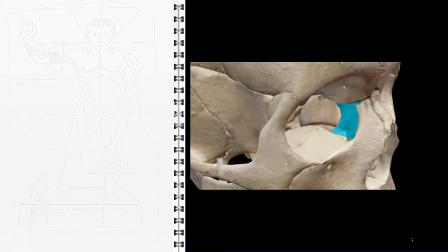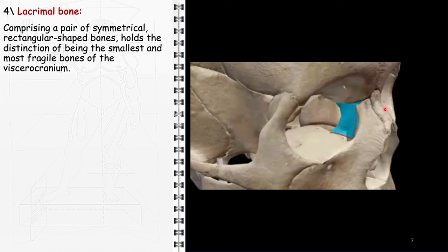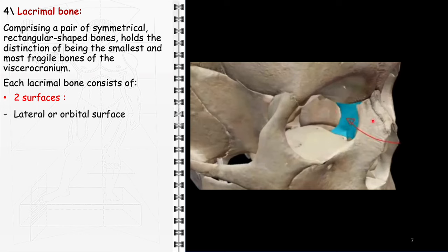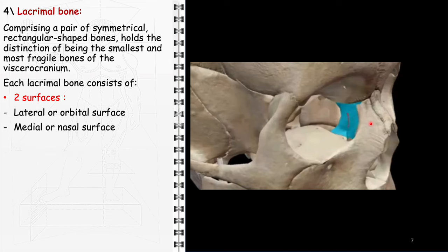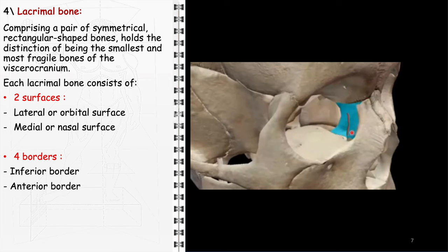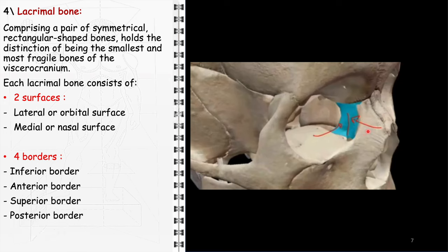The lacrimal bone consists of a pair of small, symmetrical, rectangular-shaped bones, noted for being the smallest and most delicate within the facial skeleton. Each lacrimal bone comprises two surfaces and four borders. The lateral or orbital surface forms a part of the medial wall of the orbit, its smooth, slightly concave nature facilitating the proper positioning and protection of the eye. The medial or nasal surface extends into the nasal cavity, contributing to the formation of the middle meatus. The four borders are: the inferior border, which aligns with the maxilla; the anterior border, articulating with the frontal process of the maxilla; the superior border, forming a segment of the orbital rim, especially at the lacrimal fossa; and the posterior border, adjoining the ethmoid bone and contributing to the delicate bony framework separating the orbital and nasal cavities.